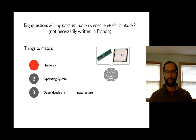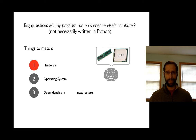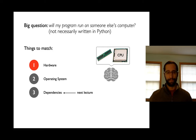The big question today: will my program run on somebody else's computer and produce the same results? We're going to start very general — we're not even going to assume the program is written in Python. For this to work, a few things have to match: the hardware needs to be similar, and you have to worry about the operating system — what if I'm running on Windows and you have a Mac?